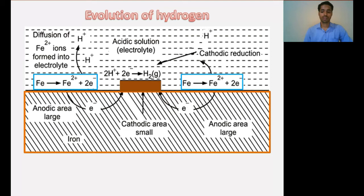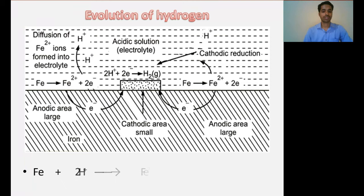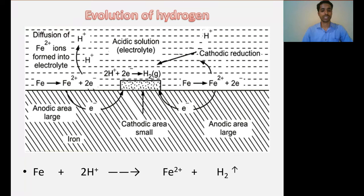The whole reaction can be written as: 2H⁺ ions accepting electrons to give H₂ gas, which bubbles out continuously on the cathodic region. If you check the electrochemical series, metals present above hydrogen in the electrochemical series will have a tendency to get corroded by the evolution of hydrogen mechanism.